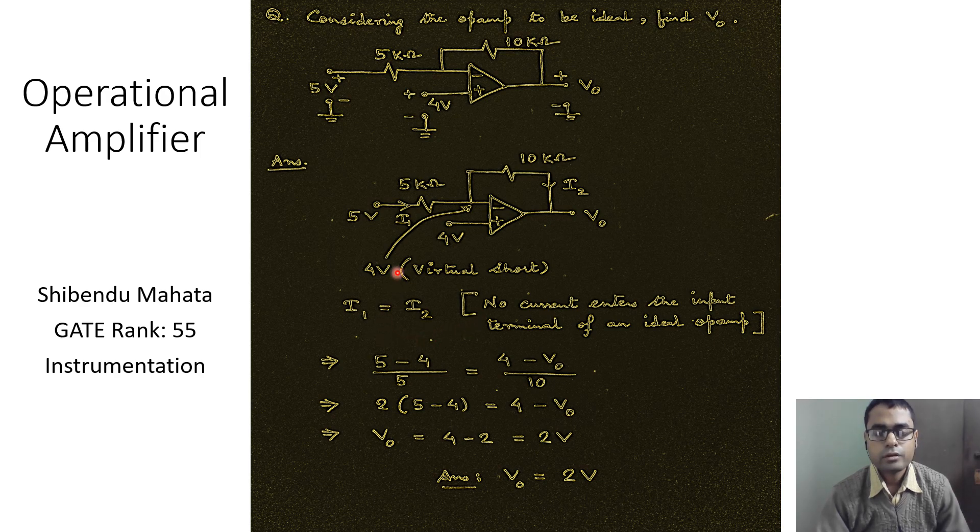Therefore, we can construct the nodal equation as: 5 volts minus 4 volts divided by 5 kilo-ohms, which is i1, must be equal to 4 volts minus V_naught divided by 10 kilo-ohms. So (5-4)/5 equals (4-V_naught)/10.